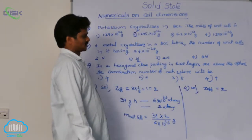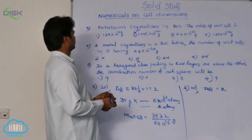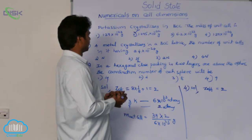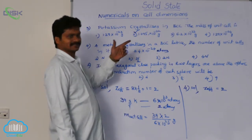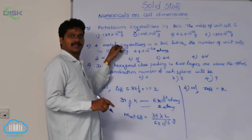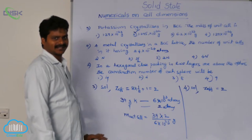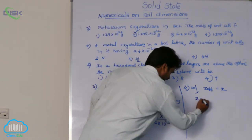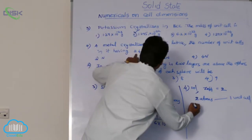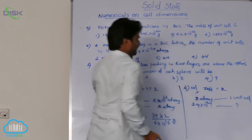For BCC, Z_eff is 2 — directly writing that here. The question asks for the number of unit cells in a sample containing 2.4×10⁻²⁴ atoms. We know that 2 atoms form 1 unit cell. So if 2 atoms form 1 unit cell, how many unit cells do 2.4×10⁻²⁴ atoms form? That is the question.